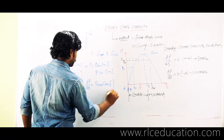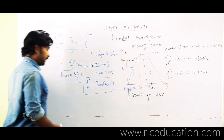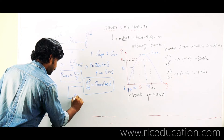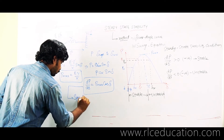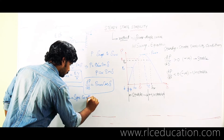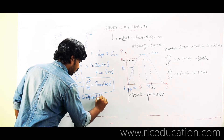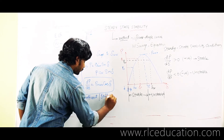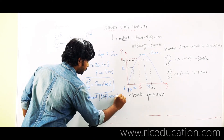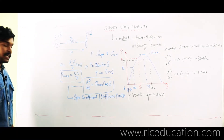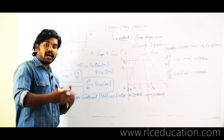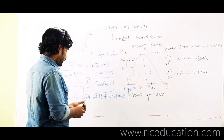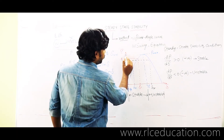This term Pmax·cos(δ) is called the synchronizing coefficient, also known as the stiffness factor of the generator. The stiffness factor indicates how much margin is available before the machine is driven into instability.